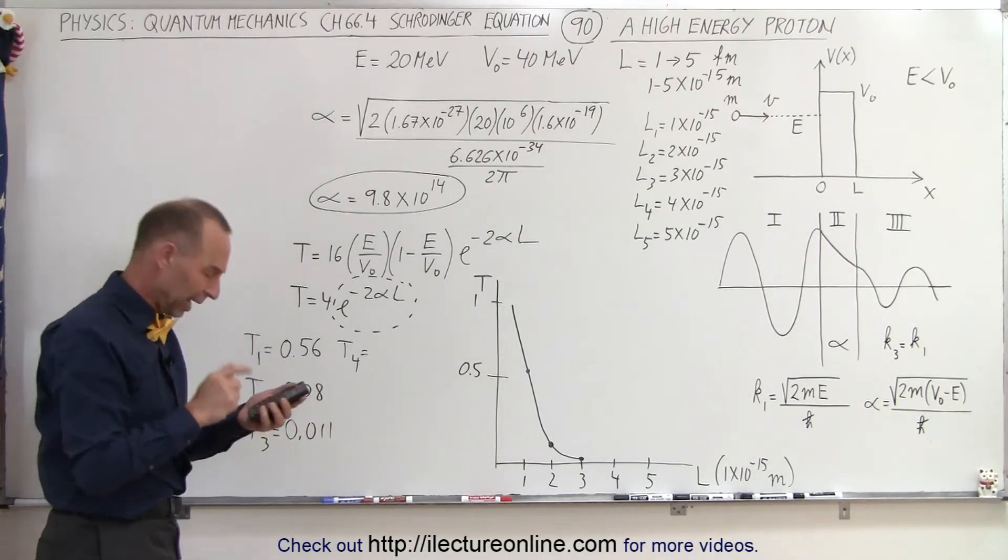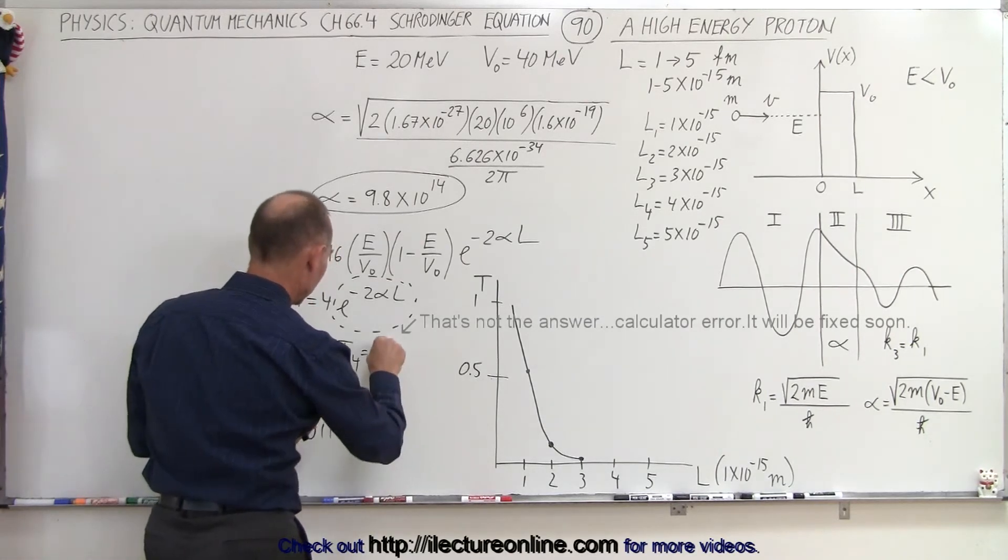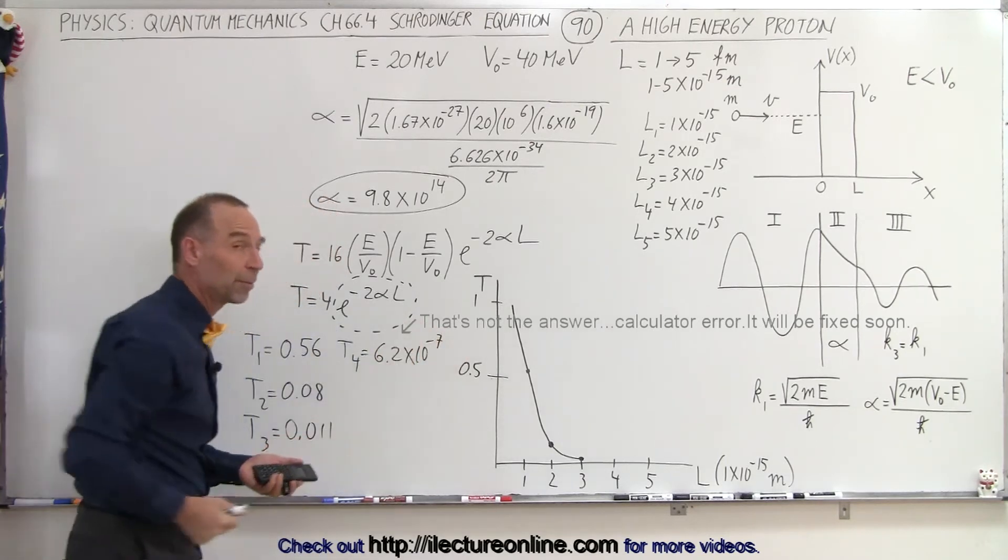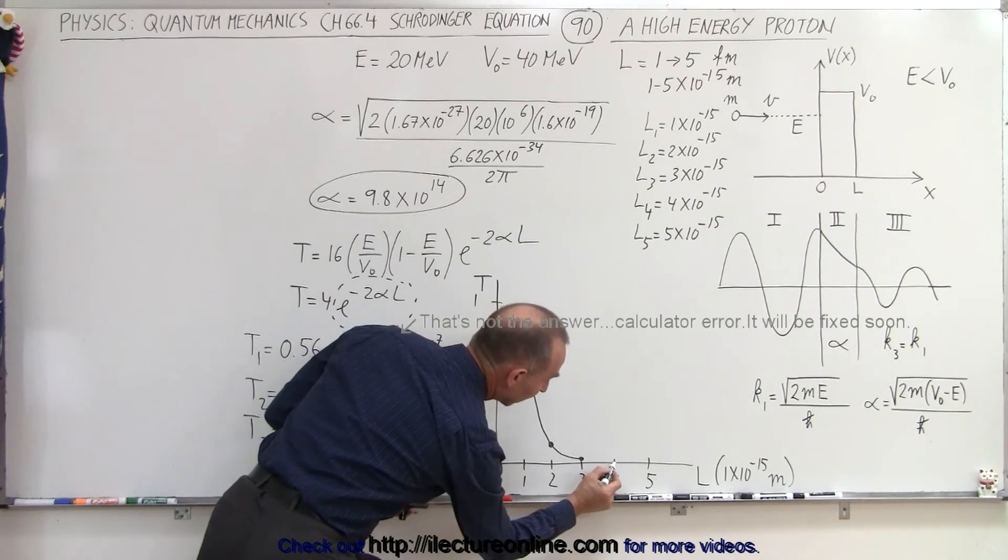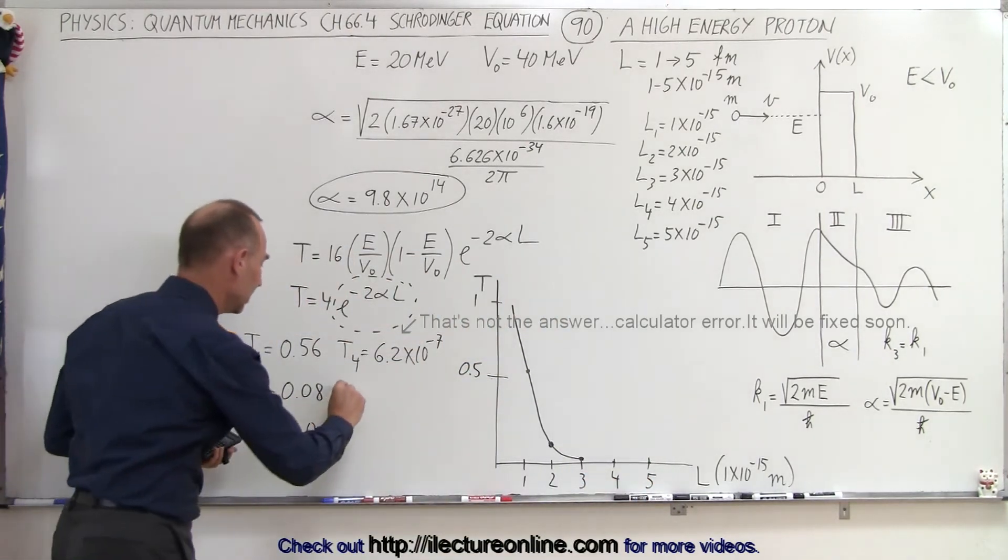So now we have 6.2, 6.2 times 10 to the minus 7. So now the probability drops to less than 1 in a million. So we're way down there, and of course when we get to the fifth one, it's going to be very tiny, T5.